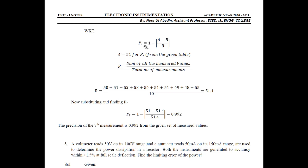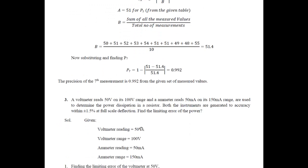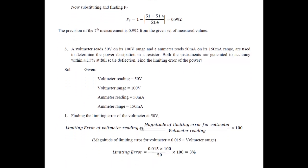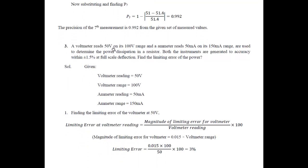Precision is 1 minus (A minus V) divided by A, where A is the measured voltage at the seventh value, which is 51, and V is the sum of all measured values divided by the total number of measurements. With 10 values and 10 iterations given, you divide the total by 10 and substitute in the precision formula. The answer for precision at the seventh measurement is 0.992.